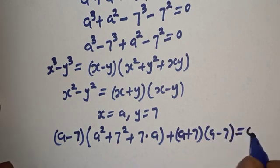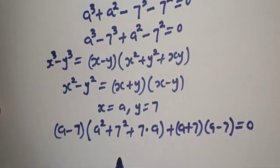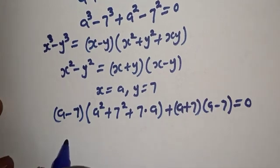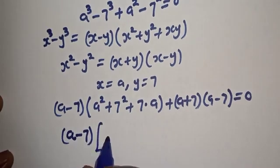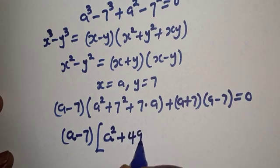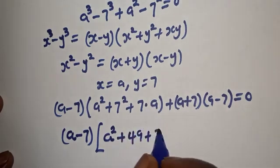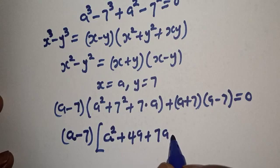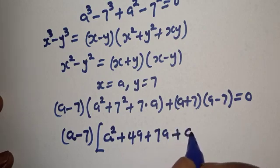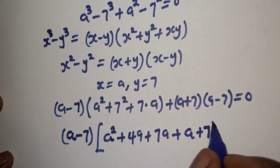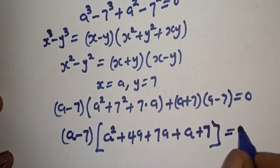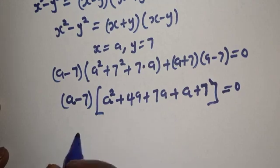Plus from the second term, a squared minus 7 squared is (a plus 7)(a minus 7), and this is all equal to zero. Now (a minus 7) is a common factor, so let's bring it out: (a minus 7) open bracket...